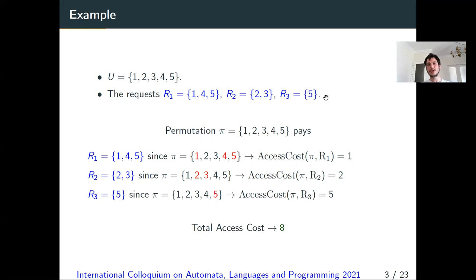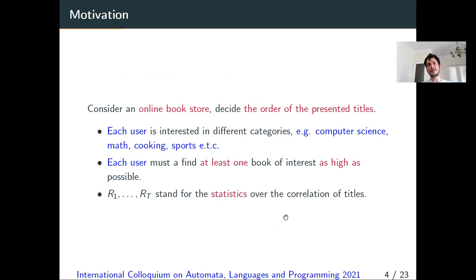For R3, we pay again access cost 1, because the first position of pi at which we find an element of R3 is position 1, where we find element 5. So the total cost is 4. If instead we had selected permutation (1, 2, 3, 4, 5), then the access cost for R1 will be 1, because we find an element of R1 in the first position. For R2 it will be 2, because we find element 2 in the second position. And for R3 we pay 5, because we find an element of R3 at position 5. So the total access cost for this permutation is 8.